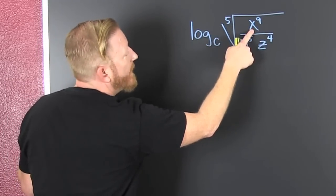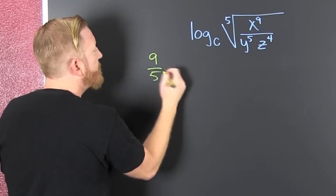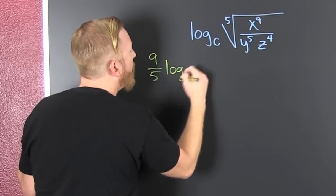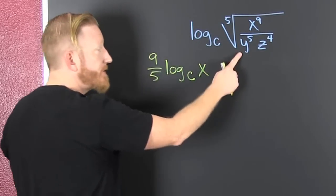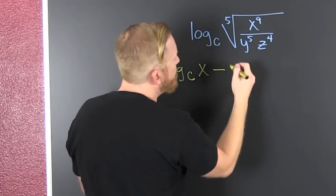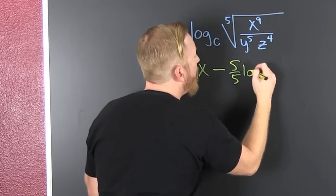So if you're expanding these logarithms real quick, see this is going to be nine divided by five on the x term. So then it's nine divided by five, it's plus because the x is in the numerator, log base c of x. Now these are in the denominator so they're going to have minus signs. That's minus, my numerator is five, my denominator is five, and this is log base c of y.